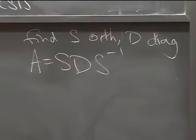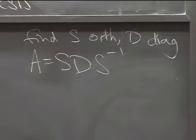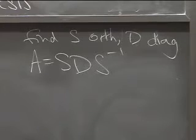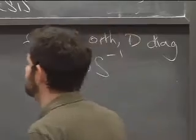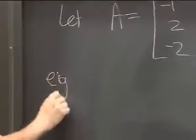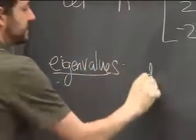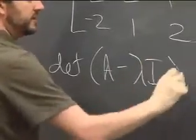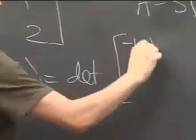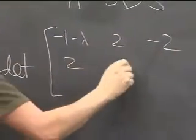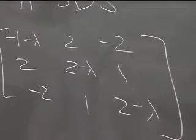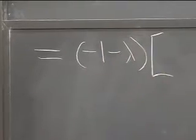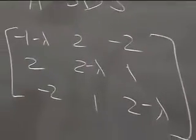We find eigenvalues by computing det(A − λI). Expanding the 3×3 determinant across the top row gives (−1 − λ) times the 2×2 minor with entries (2 − λ)² − 1, minus 2 times another minor, and a final term involving (2 − λ).